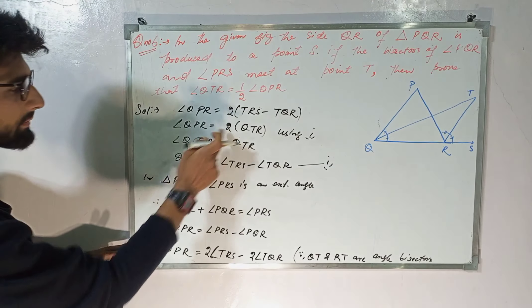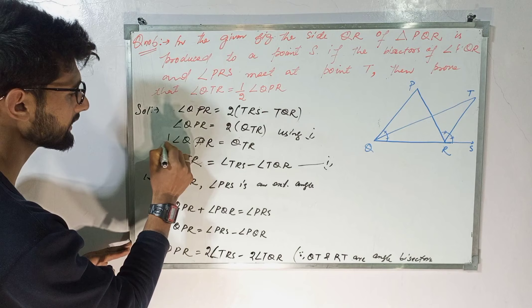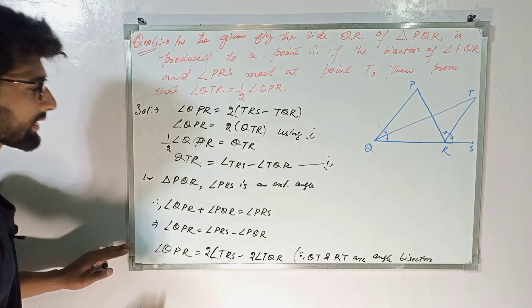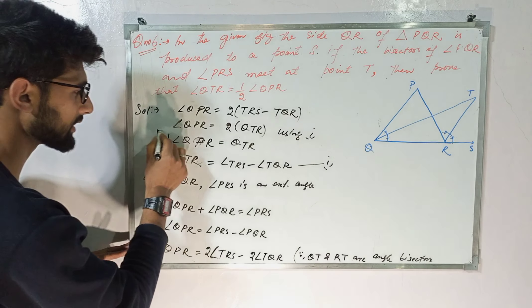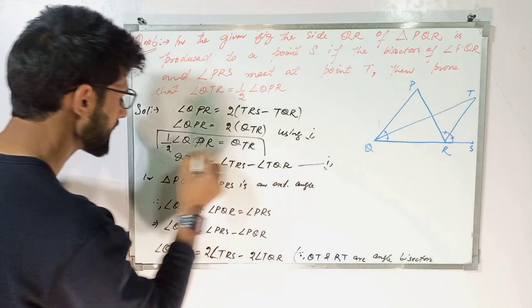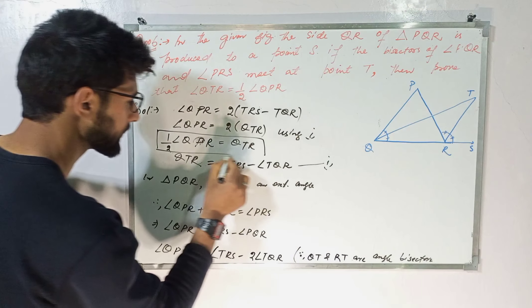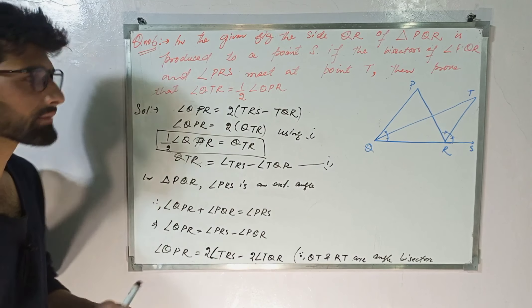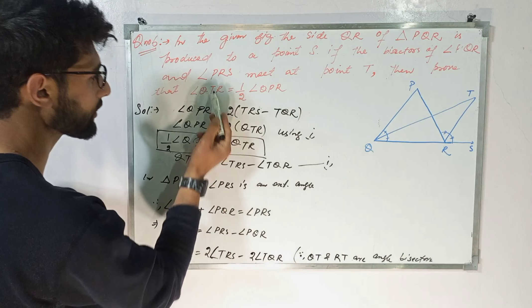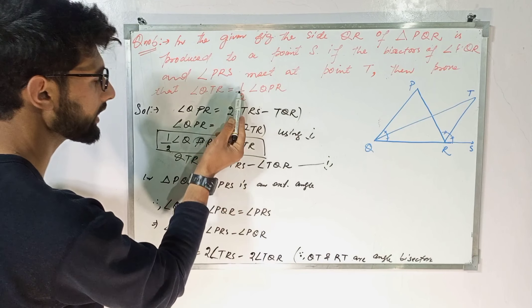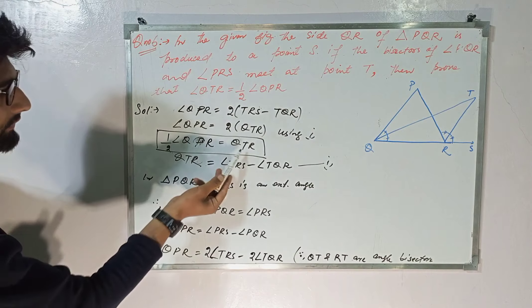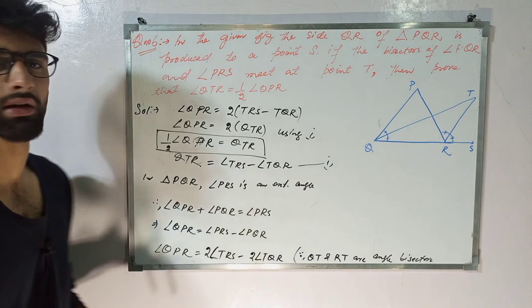Since the two is on the other side, it becomes a divisor, giving us half of angle QPR equals angle QTR. Therefore angle QTR equals half of angle QPR, which is exactly what we had to show. Hence proved.